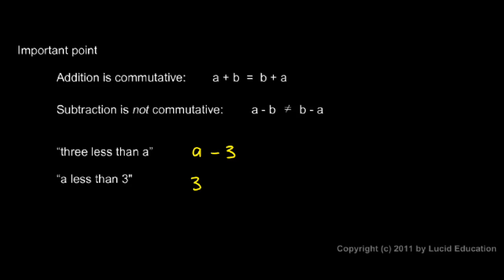It could be any number. We don't know what number it is, but it's a number. And we have that many less than three. So it's three minus that, three minus A.